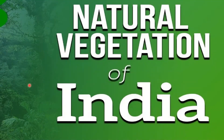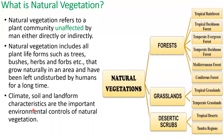Having studied about the climate of India in the previous class, today let us learn about natural vegetation of India. Natural vegetation refers to a plant community unaffected by man either directly or indirectly — that is, the trees, plants, grass, shrubs, herbs, or anything that grows without any human effort is called natural vegetation.